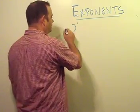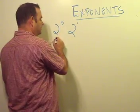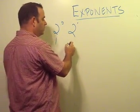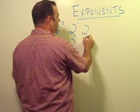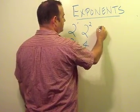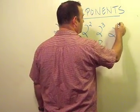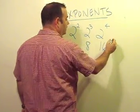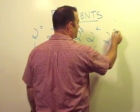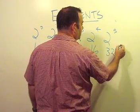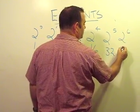So we have 2 to the 1, of course 2 to the 0 is equal to 1, 2 to the 1 equals 2, 2 to the 2 is equal to 4, 2 to the 3 is equal to 8, 2 to the 4 is equal to 16, 2 to the 5th is equal to 32, and 2 to the 6th is equal to 64.